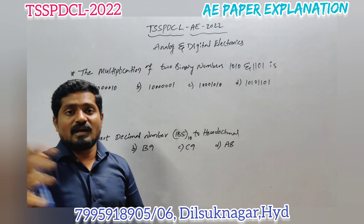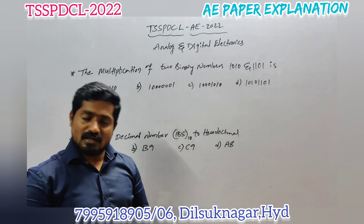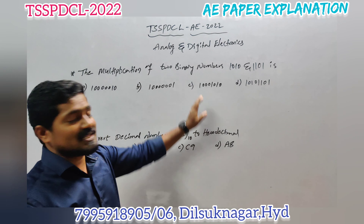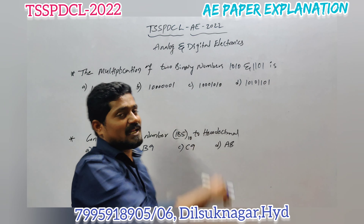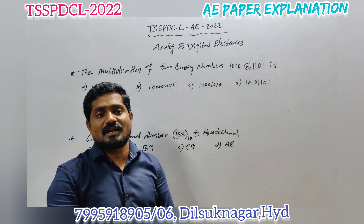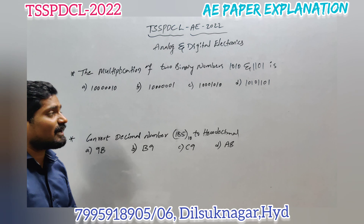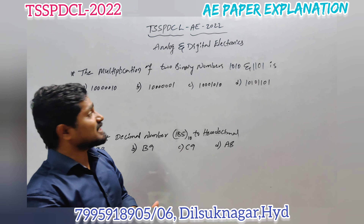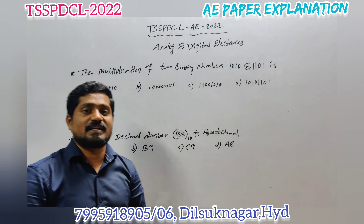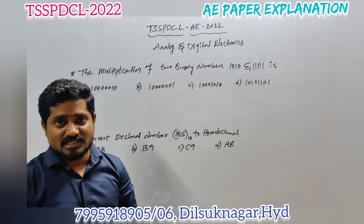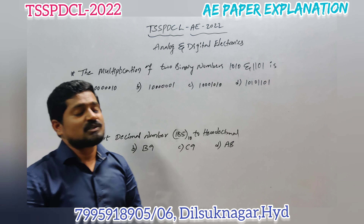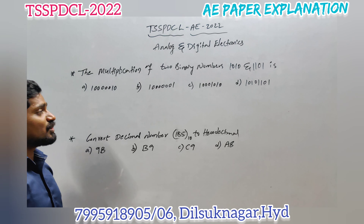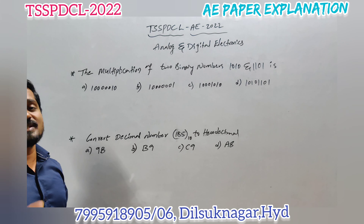This video will help you for sub-engineering as well as further AE examinations. In analog and digital electronics we had a total of seven marks, with two questions from digital electronics. I will explain what those two digital electronics questions are and how to solve them easily. In TSSPDCL AE this time we got completely basic questions from digital only — to solve those two questions we need nearly five seconds.